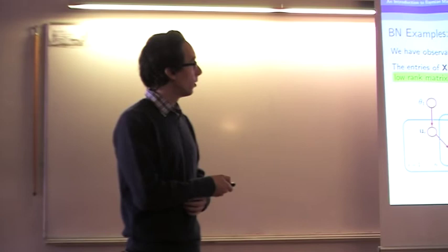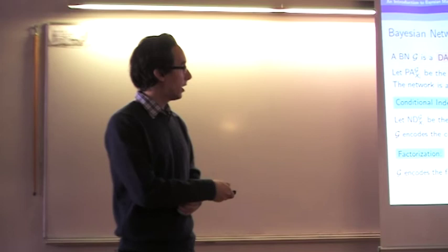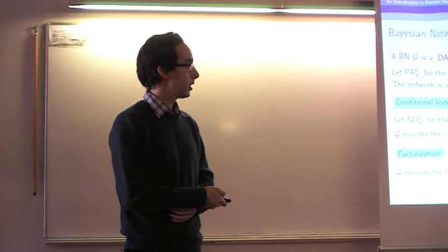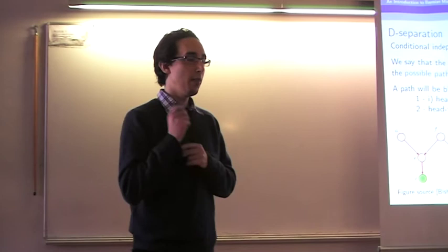Besides the basic set of conditional dependencies, we can also identify many more conditional dependencies in a Bayesian network using a criterion called D-separation. D-separation allows us to identify all possible conditional independence relationships implied by the Bayesian network. For any sets of nodes A and B and another set C, the conditional independence condition holds when all possible paths from any node in A to any node in B are blocked.